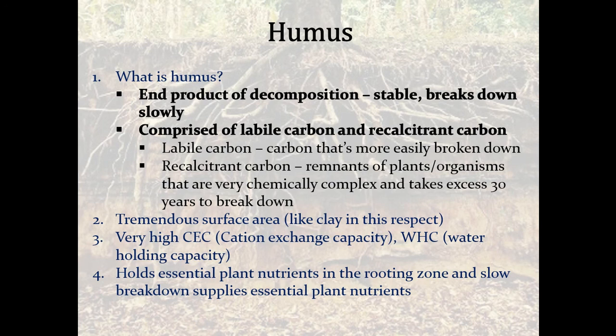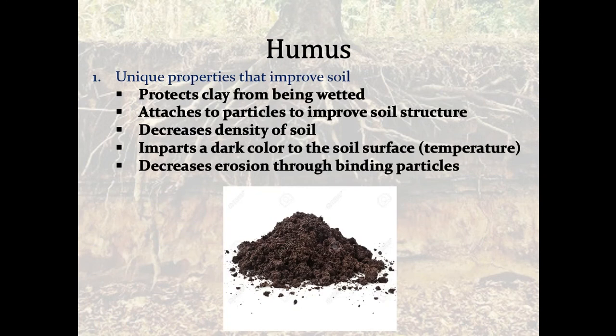Humus has a very high surface area, even higher than most clays, with very high CEC or cation exchange capacity, and water holding capacity — so very good at storing nutrients and water in the rooting zone. It has unique properties that improve soil: it protects clay from being wetted, attaches to particles and improves soil structure, decreases the density of the soil so we can have more roots and micro and macrofauna activity. It gives the soil its dark color, which can help it warm up quicker in spring, and that also decreases erosion.